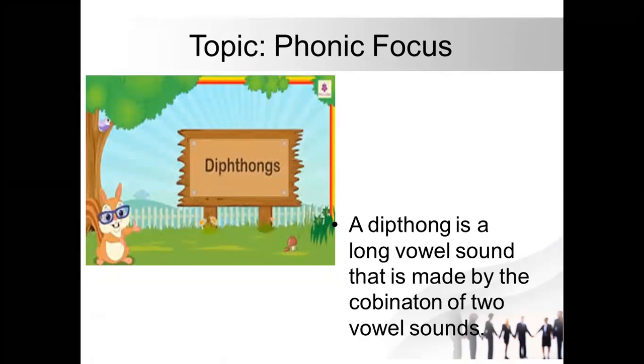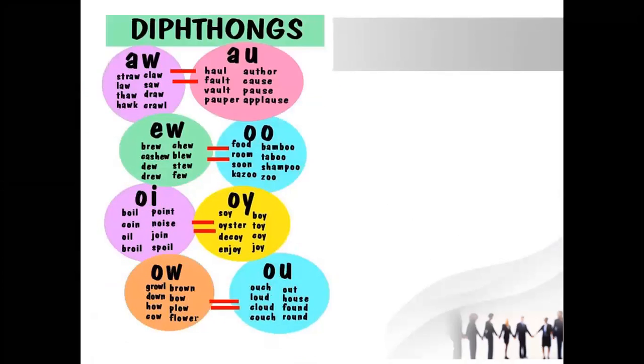For example, you can see the examples of diphthongs: 'aw' gives the sound of 'ah' or 'aw', like in straw and claw. Similarly, 'au' gives the sound of 'o', like in author and cause. 'ew' gives the sound of 'ew', like in breathe and believe. Similarly, double o, oy, oi, ou, and ow combine and give only one sound.